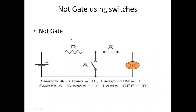Now we implement the NOT gate using a switch. The simple circuit diagram has a lamp, battery, resistor, and a switch connected. When the switch is normally open — representing input 0 — the lamp turns ON. When the switch is closed — representing input 1 — the lamp turns OFF. This demonstrates the inversion behavior of the NOT gate.